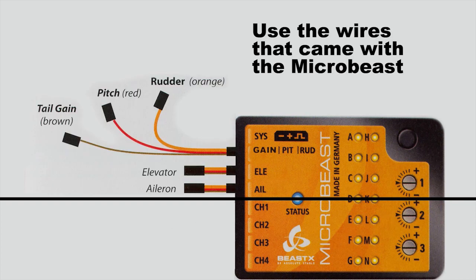We're going to use the wires that come with the microbeast - that one wire that's got three signal leads, the elevator and aileron wires.